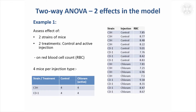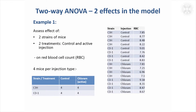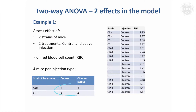So the experiment was done — there were two strains of mice, C3H and CD1, so these are two genetic strains of mice. The overall objective of the experiment was to see how an active injection called Chlorum affected their red blood cell count. Half the mice were controls with a sham injection, and half had the active injection Chlorum, and their red blood cell count was measured after the injections. There were four mice in each group for each strain, so 16 mice altogether.